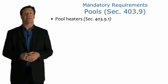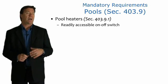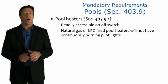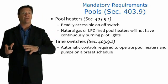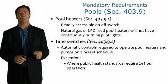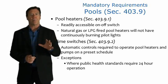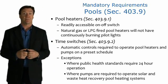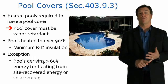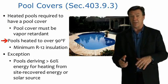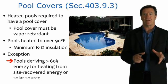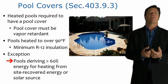For pools, there must be a readily accessible on-off switch, and natural gas or LP fire heaters cannot have continuously burning pilot lights. Pools must also have time switches and automatic controls to operate heaters and pumps on a preset schedule — exceptions apply where public health standards require 24-hour operation or where pumps serve solar or waste heat recovery systems. Pools must have a vapor-retardant cover, and pools heated over 90 degrees require a minimum of R12 insulation, except for pools deriving more than 60 percent of their heating energy from site-recovered or solar sources.